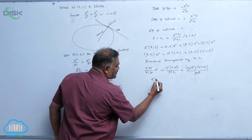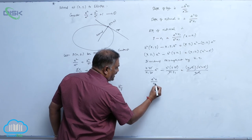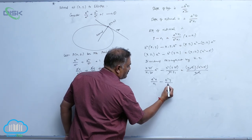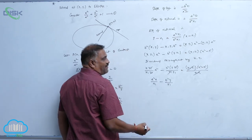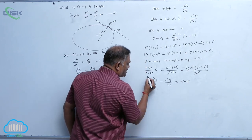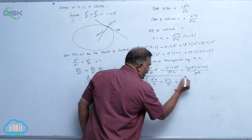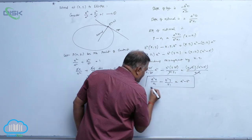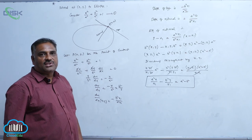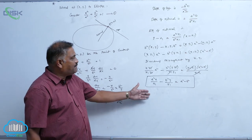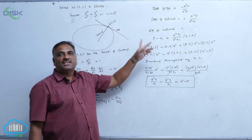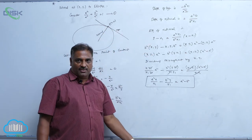After cancelling x₁ and y₁ terms, we arrive at: a²x / x₁ − b²y / y₁ = a² − b². This is the equation of the normal to the ellipse at the point P(x₁, y₁).